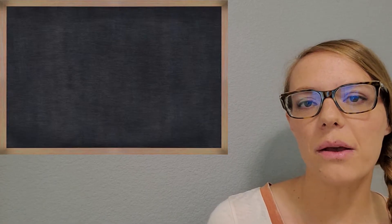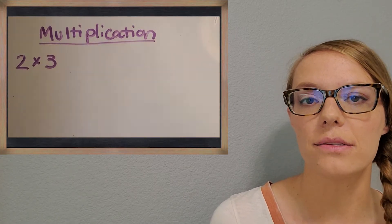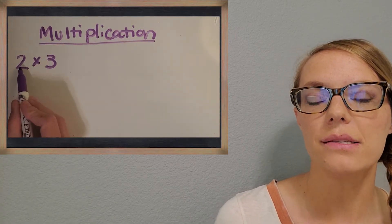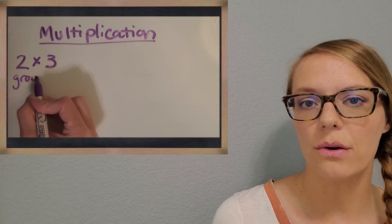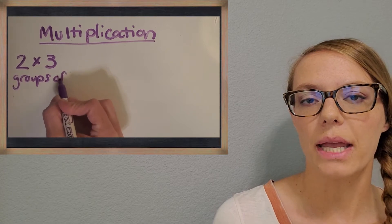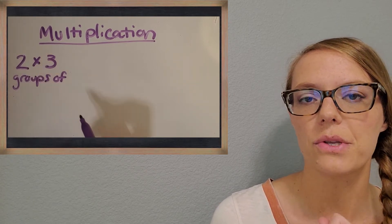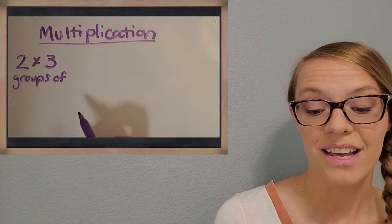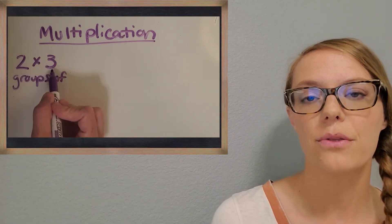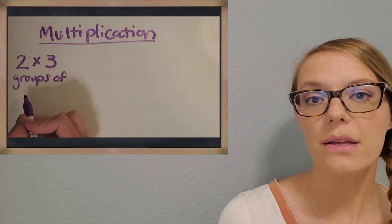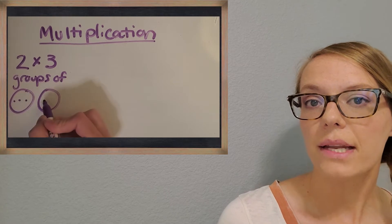The first thing I want to make sure we understand is what multiplication is. Whenever I see a problem like this, I think about groups of. I always say that when I get to the multiplication symbol, I say groups of. So let's practice with this first one. We see two groups of three, and so we can draw it and figure out what that is. What's the total?